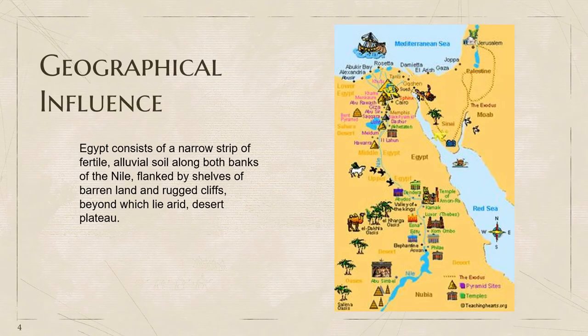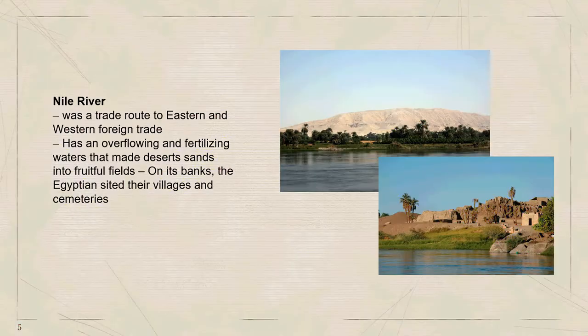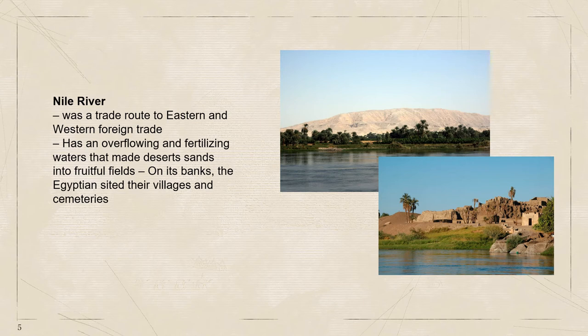Egypt consists of a narrow strip of fertile, alluvial soil along both banks of the Nile, flanked by shelves of barren land and rugged cliffs, beyond which lie a red desert plateau. The Nile was a trade route to eastern and western foreign trade, and because of its overflowing and fertilizing waters, this made the desert areas into fruitful fields. On its banks, therefore, the Egyptians sited their villages and cemeteries.